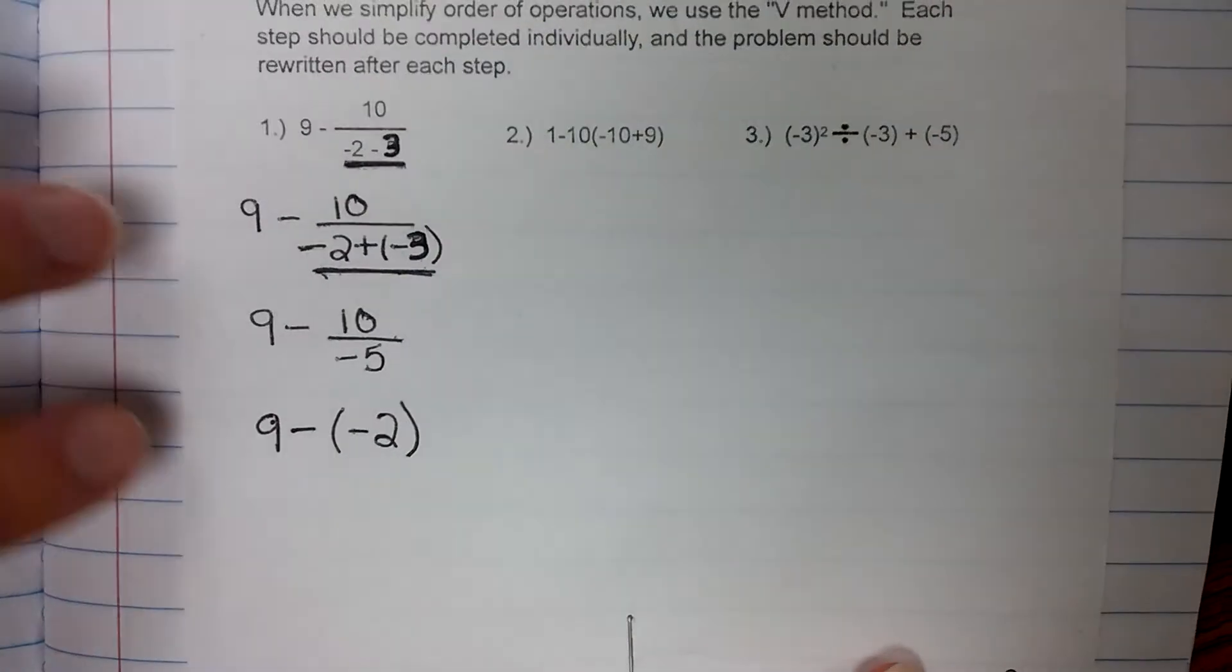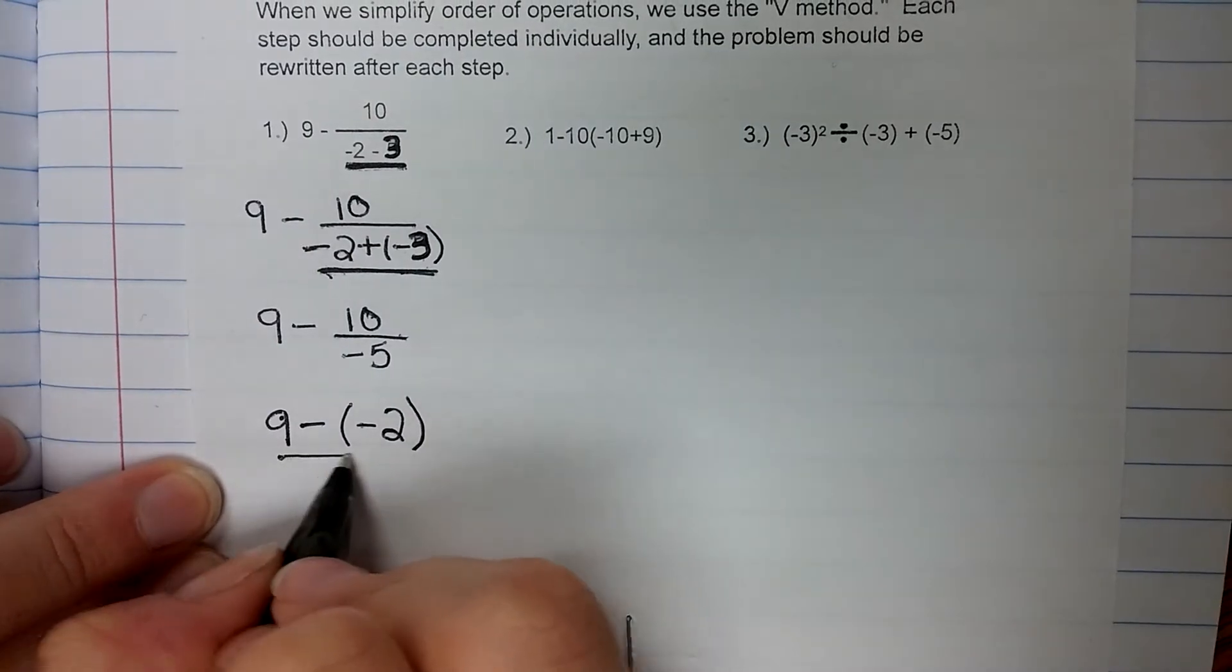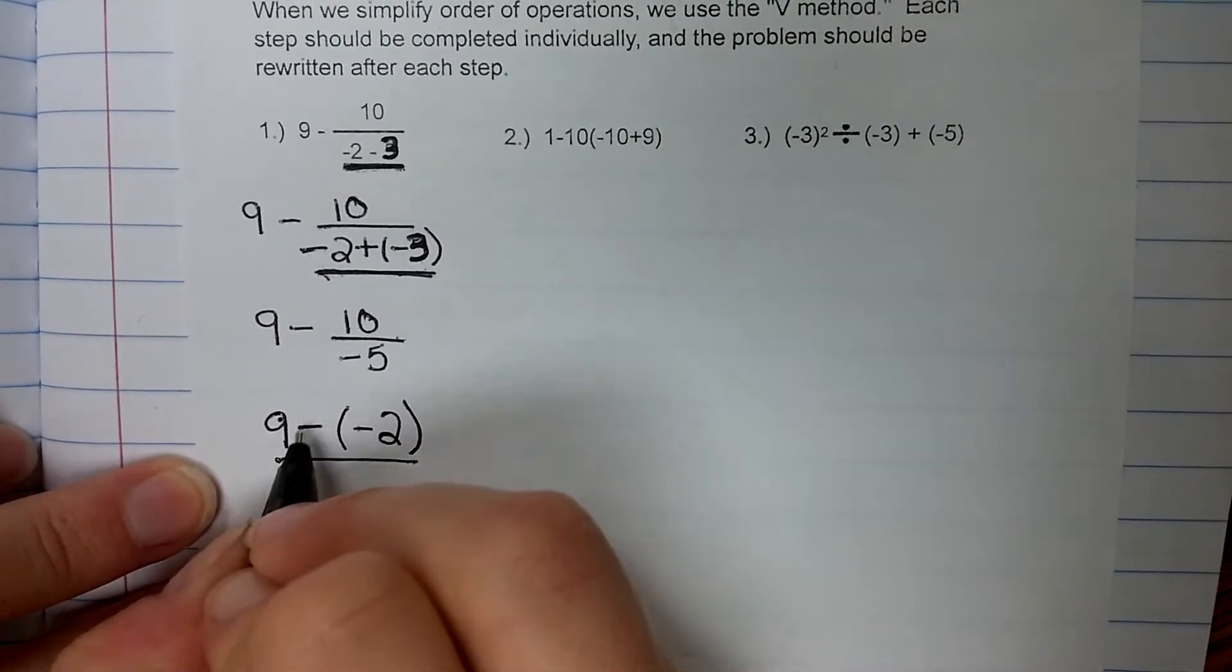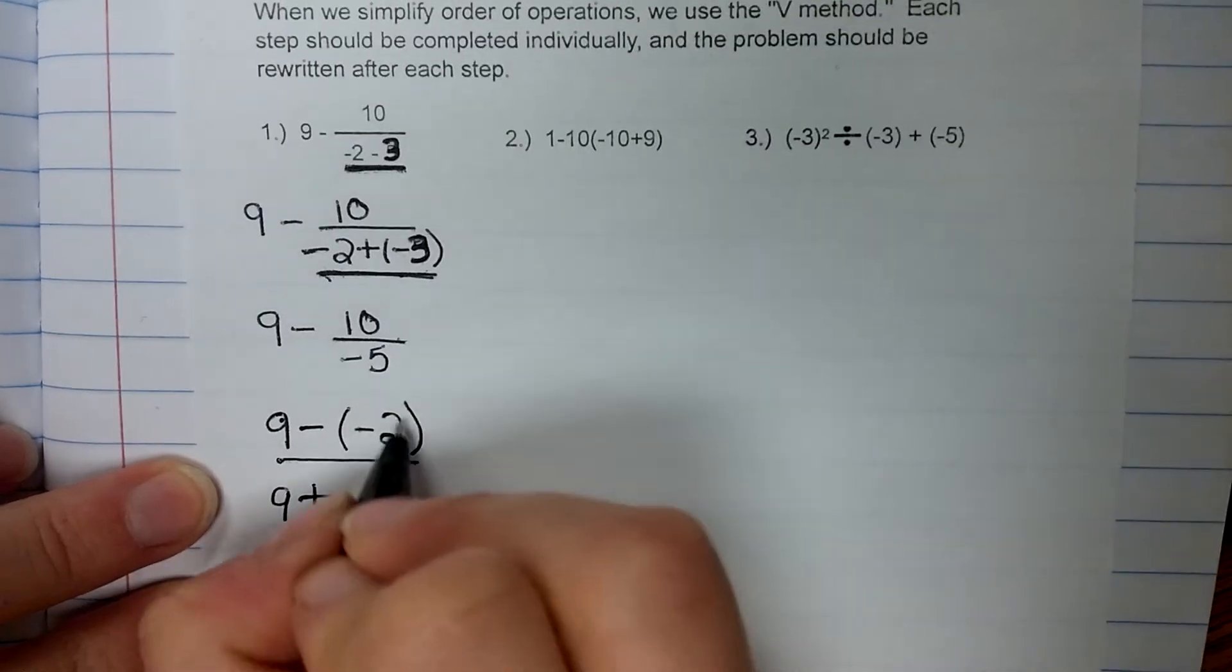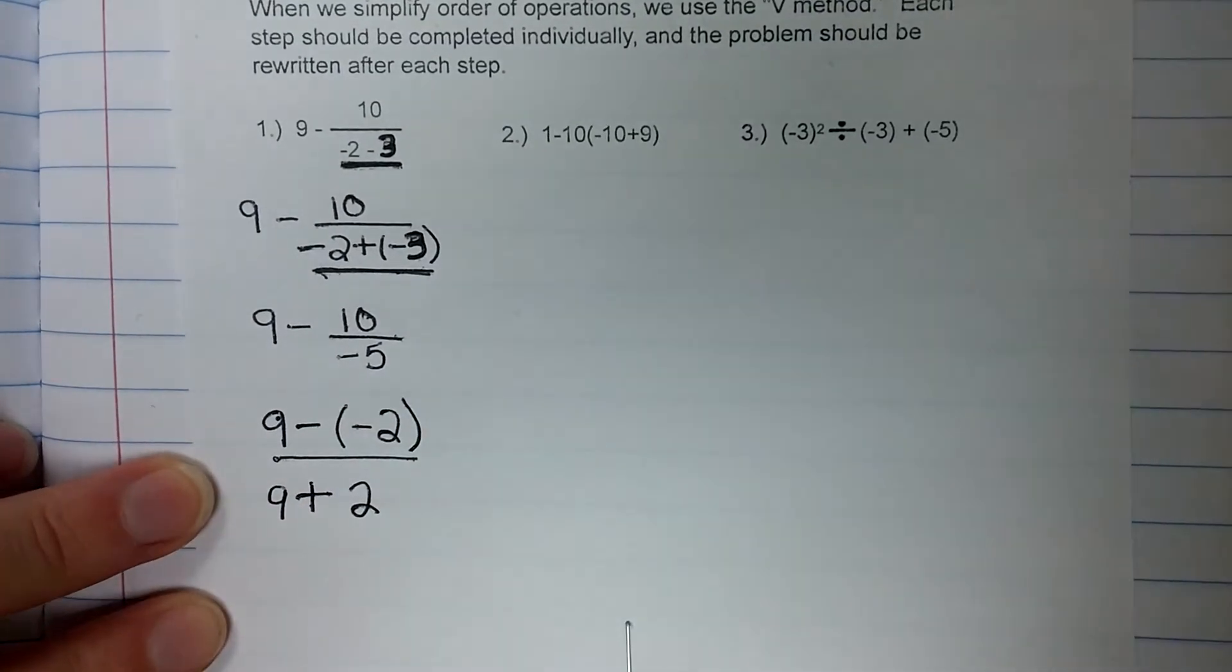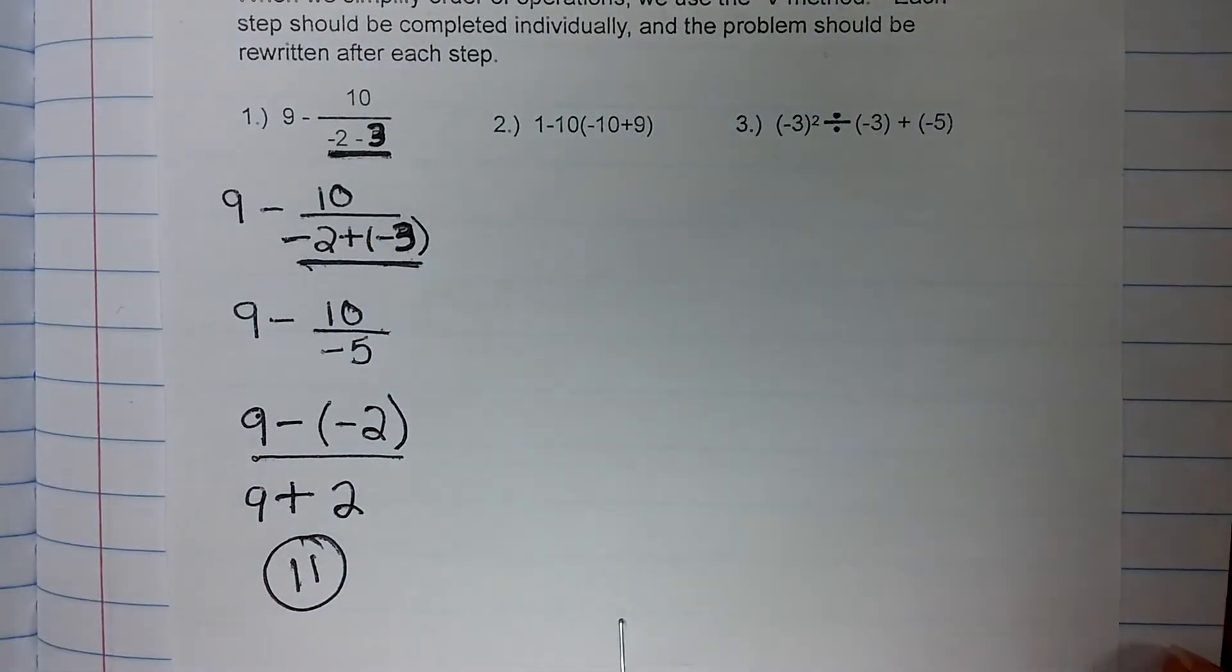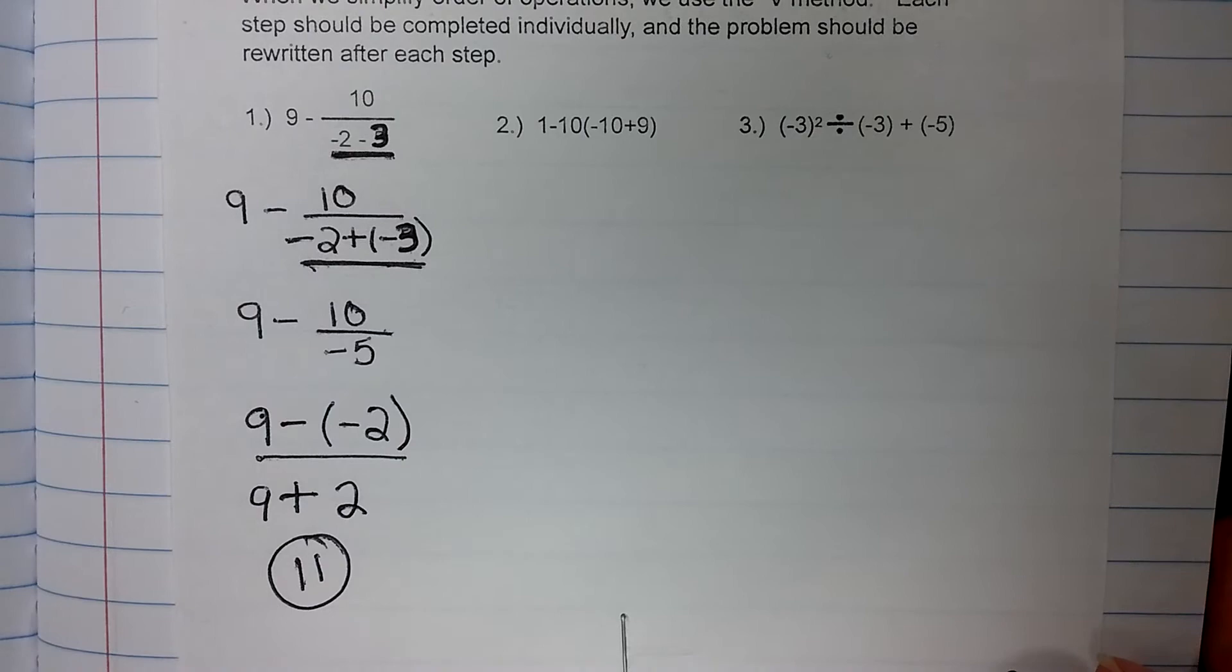Again, I'm left with a subtraction problem. This is my last step. So I can do KCO, 9, keep, change, opposite, which is 2. And 9 plus 2 gives me 11. So the final answer to number 1 should be 11. All right, number 2.